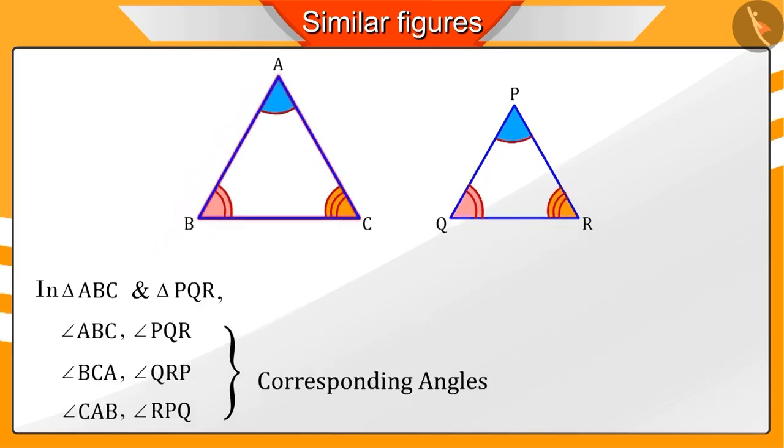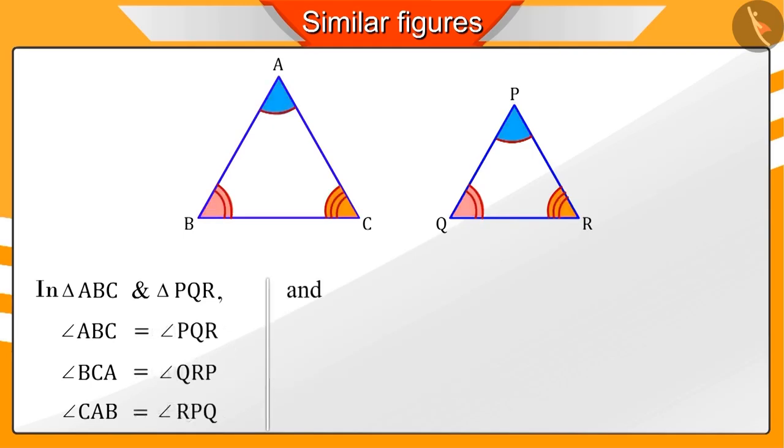When we observe the triangles ABC and PQR, we notice that their corresponding angles are equal and their corresponding sides are proportional.